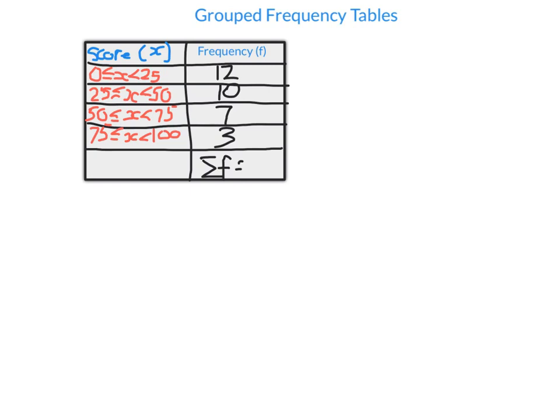When we have a grouped frequency table, it's very convenient for displaying data, but the drawback is that we don't know the individual scores. However, we can use a trick to estimate the mean and median. The mean is the sum of all scores divided by how many there are — but how do I add up scores I don't actually know?